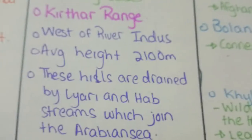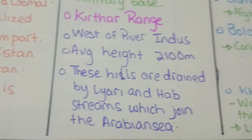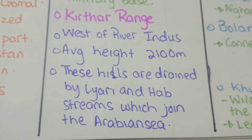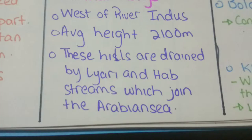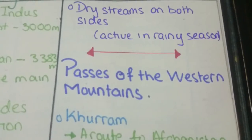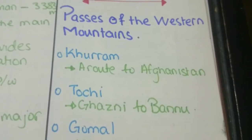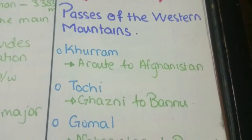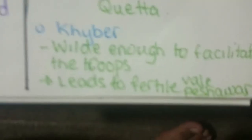Kirthar Range is west of River Indus. Average height here is 2,100 meters. These hills are drained by Lyari and Hub streams, which join the Arabian Sea. Dry streams are present on both sides. Passes of the Western Mountains include Kuram, Tochi, Gomal, Bolan, and Khyber.